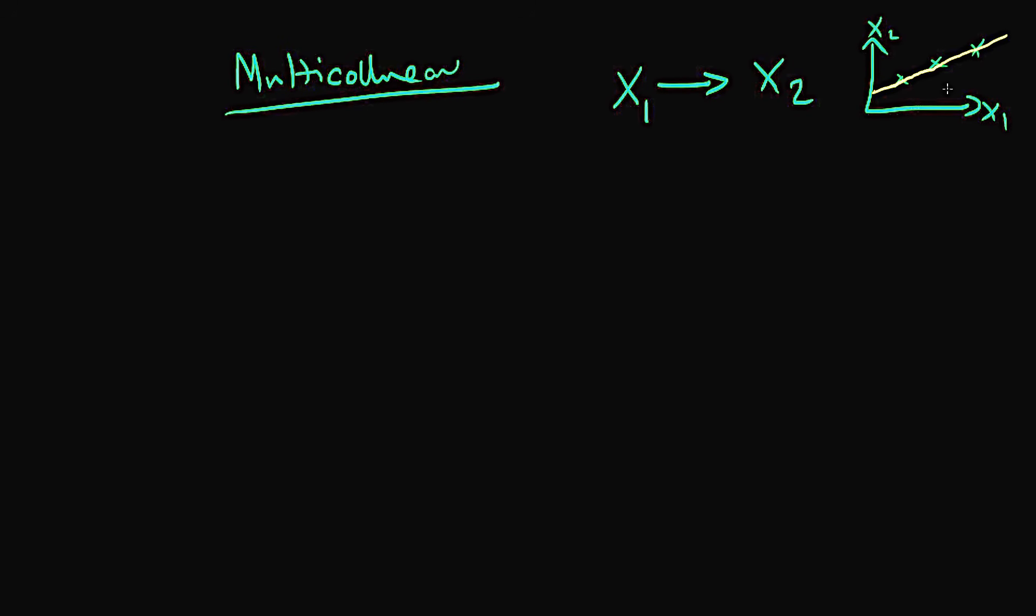Note that it doesn't have to be exactly linear, it could be a polynomial, some sort of curve. But the idea is that if I know X1, I know X2 exactly.